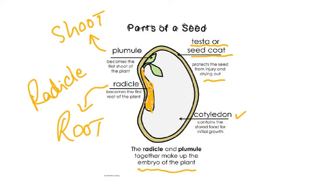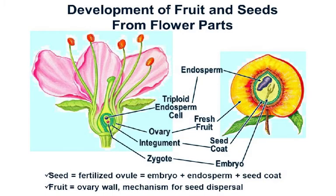The embryo is the little baby plant which will develop into the shoot and root systems. As you can see from this diagram, the fruit and seeds develop from different parts of the flower — the stigma, style and ovary. The ovary will become the fruit, and these are the sepals where the fruit has developed.